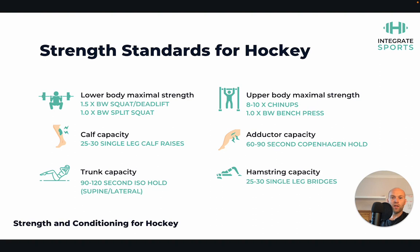Upper body: around 8 to 10 chin-ups is appropriate, equating to about 1.2 times bodyweight total system load including bodyweight plus external load. A bodyweight bench press is also appropriate. These aren't super high numbers like 2 to 2.5 times bodyweight because training time for hockey players is limited, and there are diminishing returns in a sport primarily dictated by technical and tactical outcomes. Chasing a double bodyweight squat when already at 1.5 times bodyweight probably won't make an enormous impact relative to time spent practicing on the pitch.